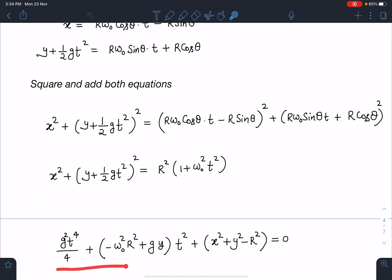It's a four-degree equation in t, or you can call it a bi-quadratic equation, or a quadratic equation in t². So (g²t⁴)/4 + (-ω₀²R² + gy)t² + (x² + y² - R²) = 0. It's a bi-quadratic equation.